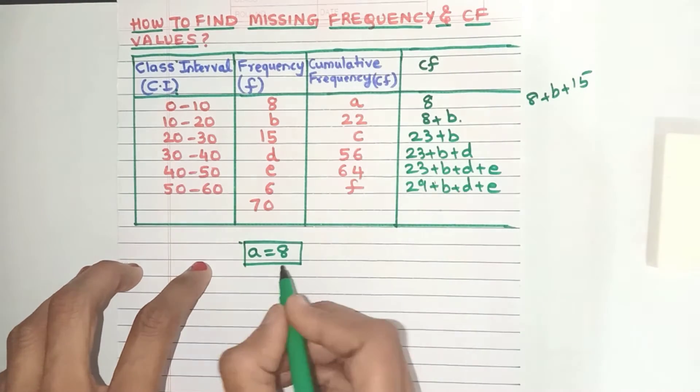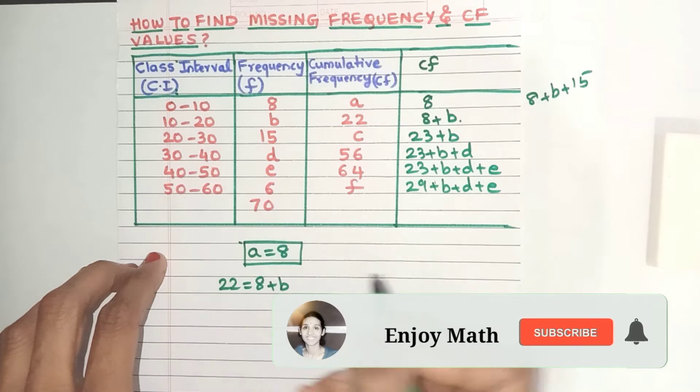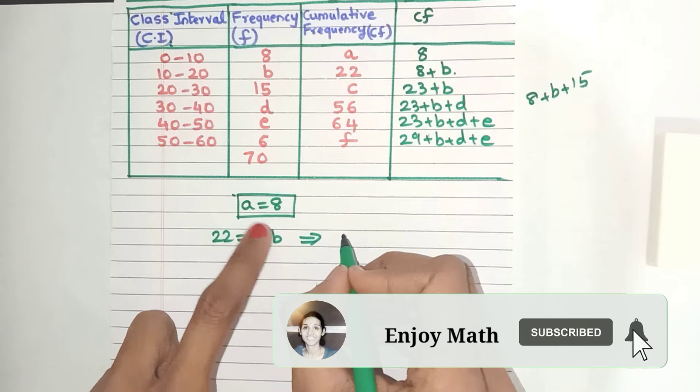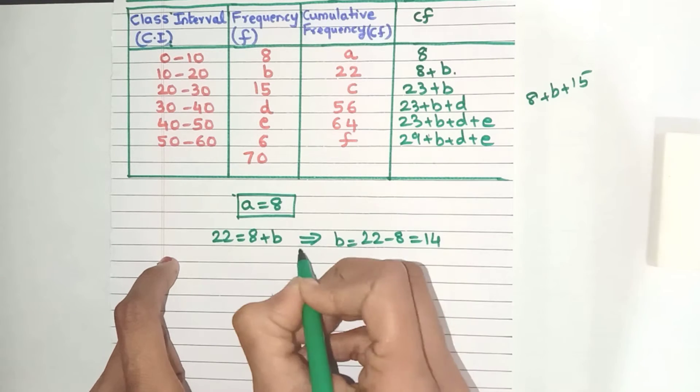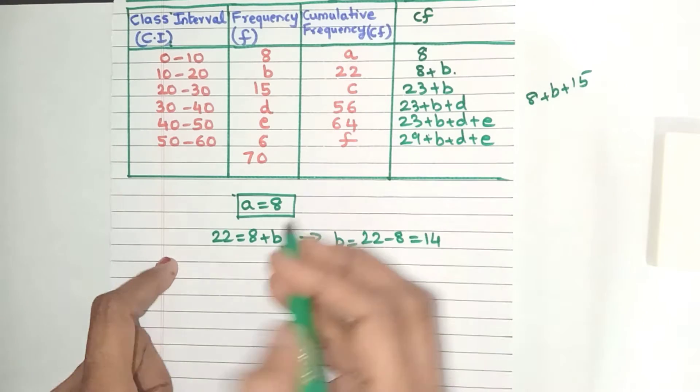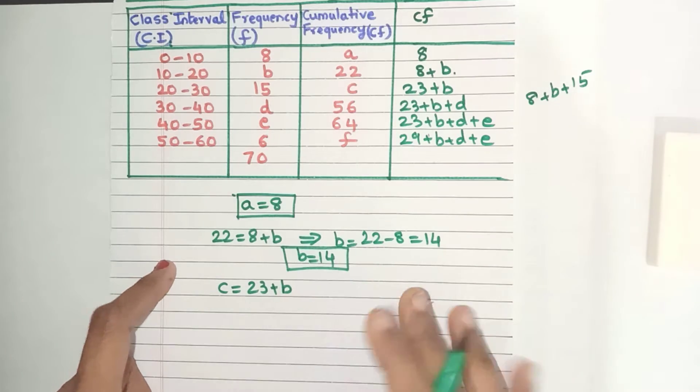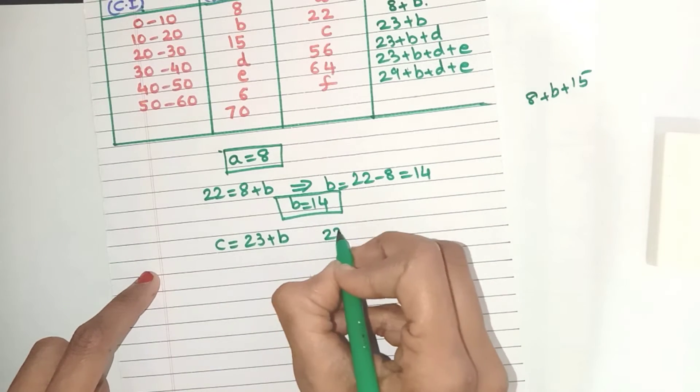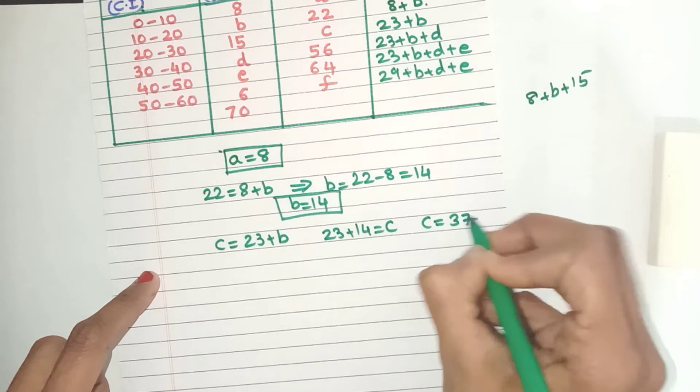Let's come to the next class interval. So we get 22 equal to 8 plus B. This means I can bring 8 on the other side. So I'll get B equal to 22 minus 8 which is 14. Now let's equate these two. C equal to 23 plus B. But I just got the value of B, right? So 23 plus 14 equal to C, which means C is 37.